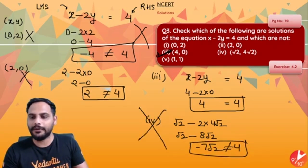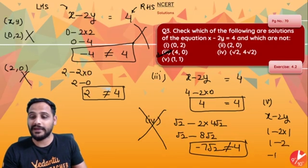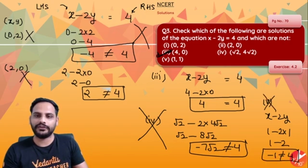And the fifth one, 1, 1. So x minus 2y will become 1 minus 2 into 1 which is 1 minus 2 which is minus 1 and it is again not equal to 4. So this is also not a solution.